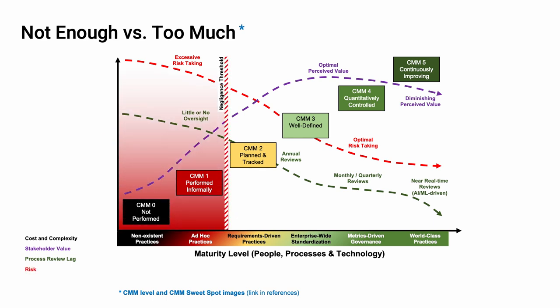We can establish a negligence threshold between CMM level 1 and 2 because the amount of risk is so high. Any objective third party would look at the lack of processes in place to ensure that cybersecurity controls are applied and say there is simply no reason why they're not being used and tracked. This brings us to the maturity sweet spot — it's above the negligence threshold, below the diminished perceived value area, doesn't rely on AI or ML, and is within bounds of optimal risk taking. Generally speaking, performing at CMM levels 2, 3, or 4 gets you the best return on investment.